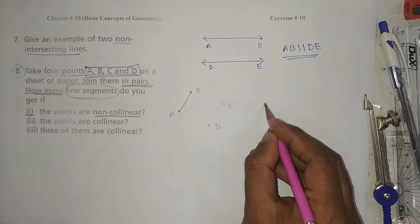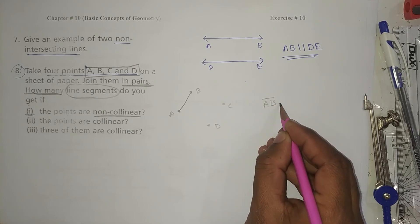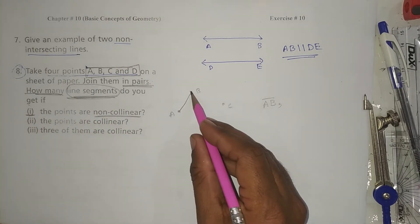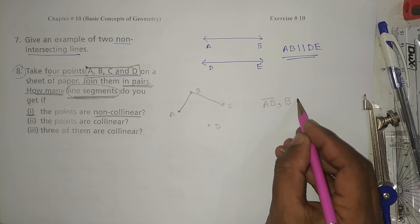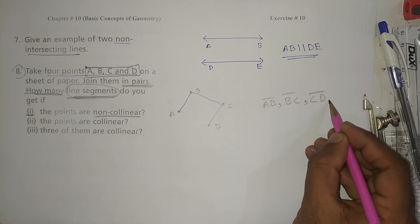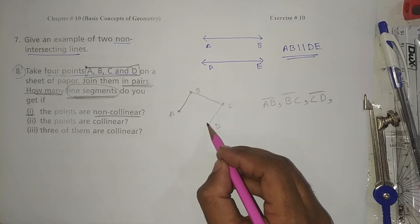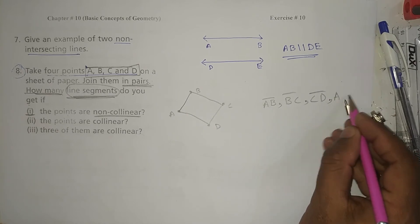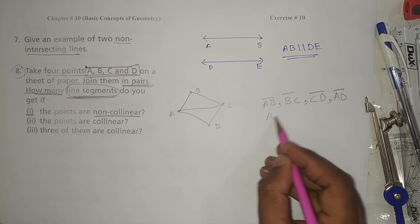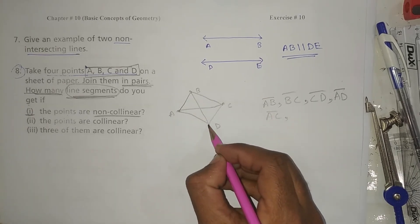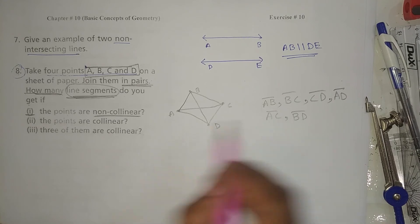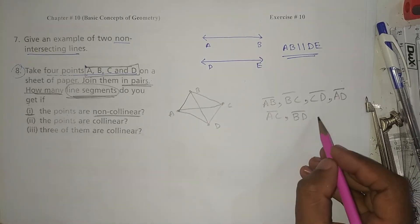When I am going to join, firstly I join A to B. I can write AB line segment. Understand what I have to write? Line segments. And then when I join with C, I can write BC line segment, CD line segment, and then AD line segment. If I join A with C, AC. B with D, BD line segment. So how many line segments can be drawn from these non-collinear points? There are six line segments you can draw.